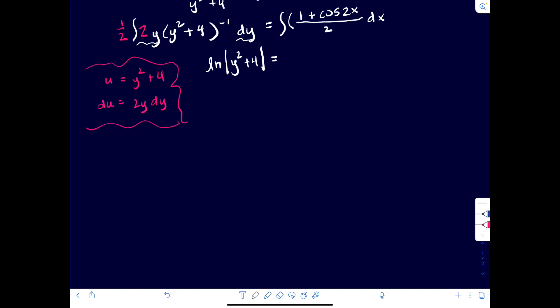Okay, so we can bring that one half out, and then we would have times the integral of quantity 1 plus cosine of 2x dx. And then why don't we multiply both sides by 2. And we'll have 2 times natural log absolute y squared plus 4 is equal to the integral of 1 dx plus the integral of cosine of 2x times dx.